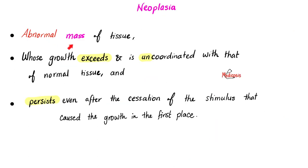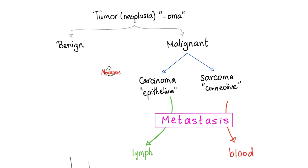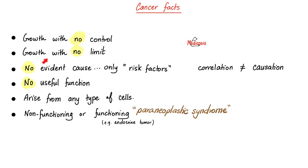Neoplasia — what's that? An abnormal mass. Cancer is a mass whose growth exceeds and is uncoordinated with that of normal tissue, and persists even after cessation of the original stimulus. Tumors could be benign or malignant. The malignant ones could be carcinoma if they are cancers of the epithelium, or sarcomas if they are cancers of connective tissue. Carcinomas metastasize to lymph. Sarcomas love to metastasize through the blood. Cancer is growth with no control, growth with no limit, no evident cause — that's why we say risk factors, not causes, because correlation is not the same as causation.